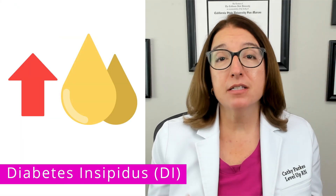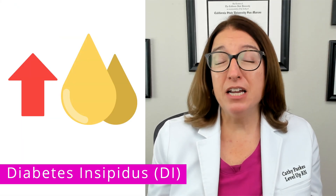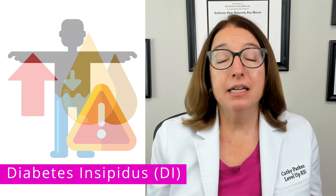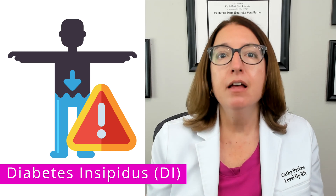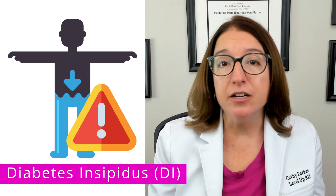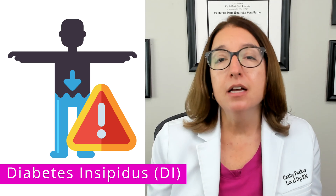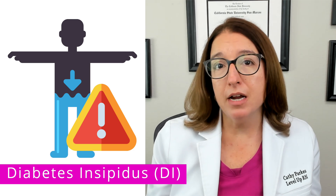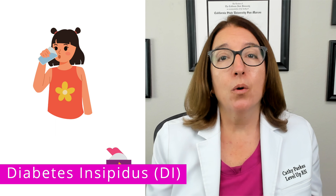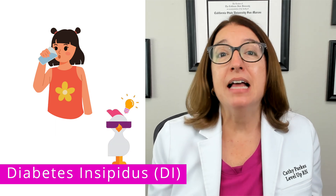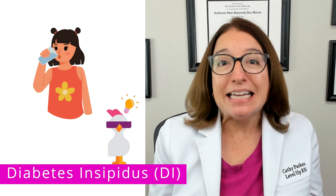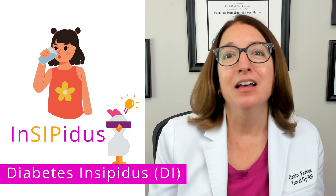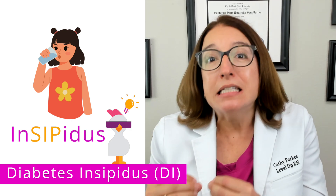The hallmark symptom of diabetes insipidus is the patient peeing lots and lots of dilute urine. Because they're losing all that water in their urine, they will exhibit signs and symptoms of dehydration, such as increased thirst, decreased skin turgor, hypotension, dry mucus membranes, and sunken fontanelles. Our cool chicken hint to help you remember that dehydration is a key symptom of diabetes insipidus is: with diabetes insipidus, your patient will want to sip a lot of water.